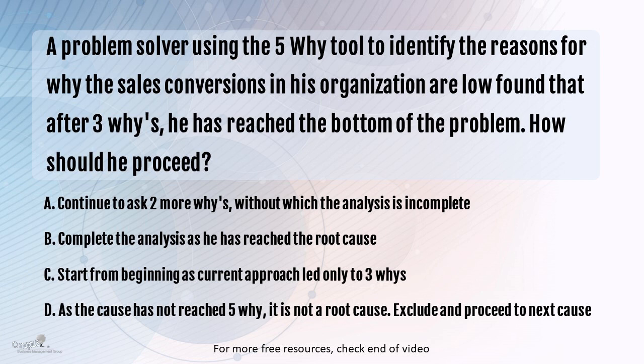Option A: continue to ask two more Ys because it's a 5Y technique — we need to ask two more Ys, without which the analysis is incomplete. Option B: complete the analysis, as he has reached the root cause. Option C: start from the beginning, as the current approach has led only to three root causes. Option D: as the cause has not reached 5Y, it is not the root cause — so exclude this and proceed to the next cause.